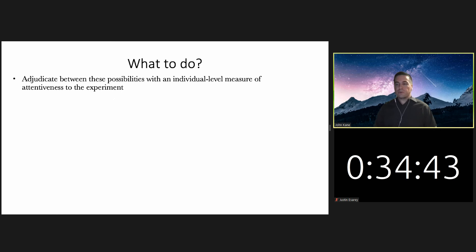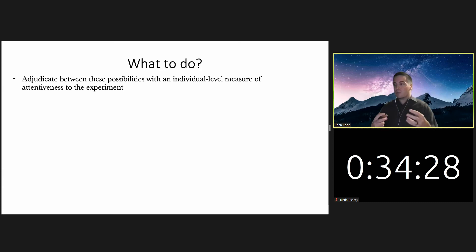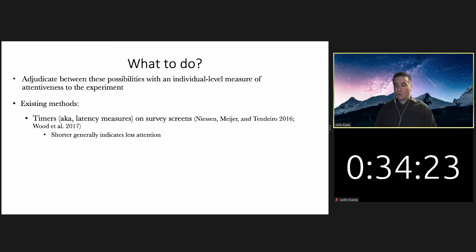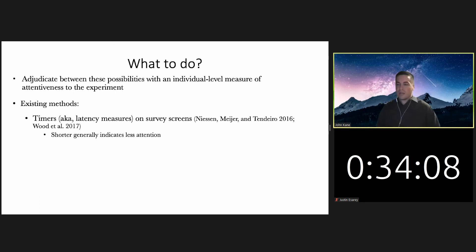So what to do? Ideally we'd like the ability to adjudicate between these different possibilities with an individual-level measure of attentiveness to the experiment. That would help us determine the extent to which inattentiveness might be responsible for the results we're getting. There are some existing methods for this. One is timers — otherwise known as latency measures — which are perhaps more popular in psychology than in political science, though used quite a bit in political science as well. These are timers on survey screens measuring exactly how long respondents are spending on any given piece of information.